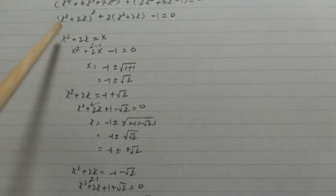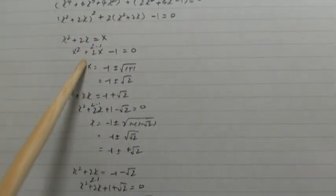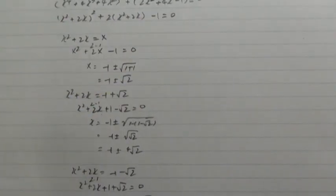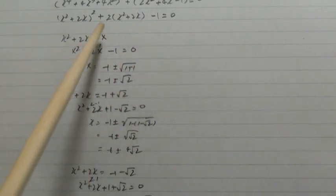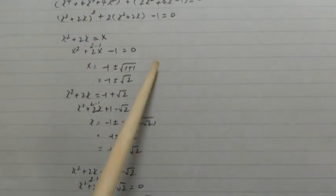x^2 + 2x equals x now. And then this equation, by solution formula: a = 1, b = 2, c = -1.